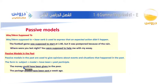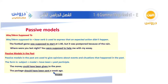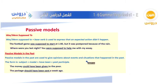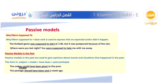Who should give the money? It's not mentioned — so this is passive. Another example: The package should have been sent a week ago. The writer uses this form to give opinions about events and situations that happened in the past.